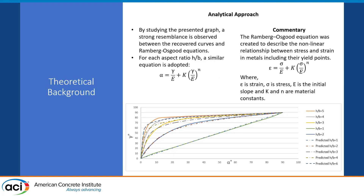What we did is we found a resemblance between what is called the Ramberg-Osgood equation, which is typically used to model the nonlinear relationship between stress and strain in metals. We borrowed that equation to match the variation and come up with an accurate, yet efficient software algorithm to calculate these relationships and thus build the interaction diagram efficiently and quickly.